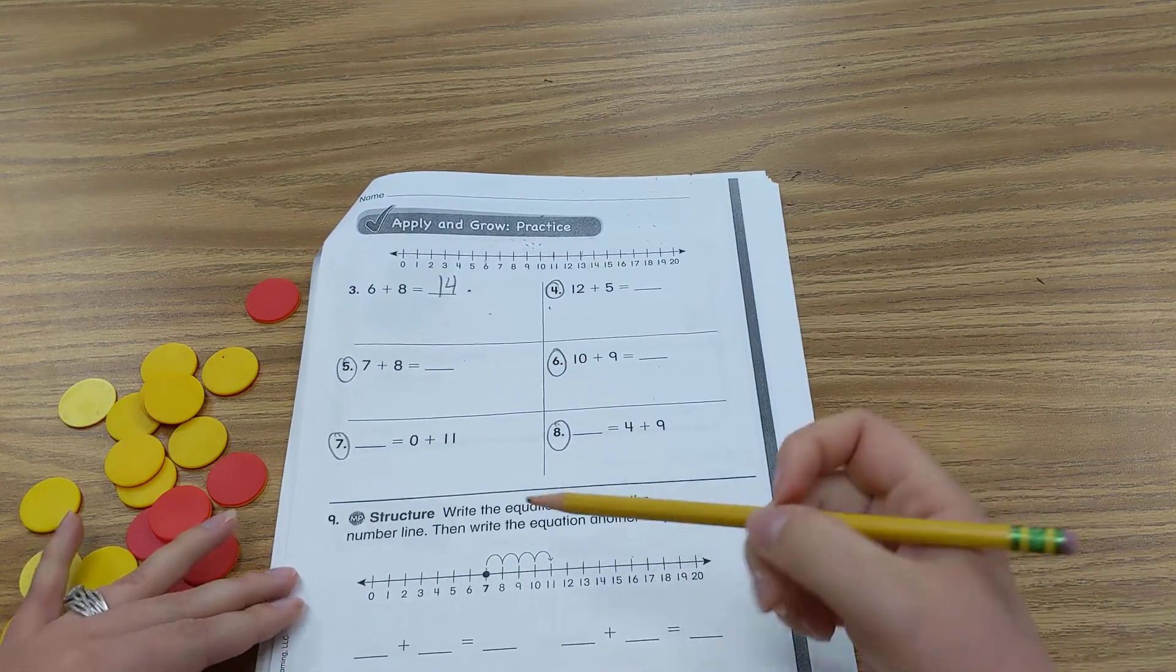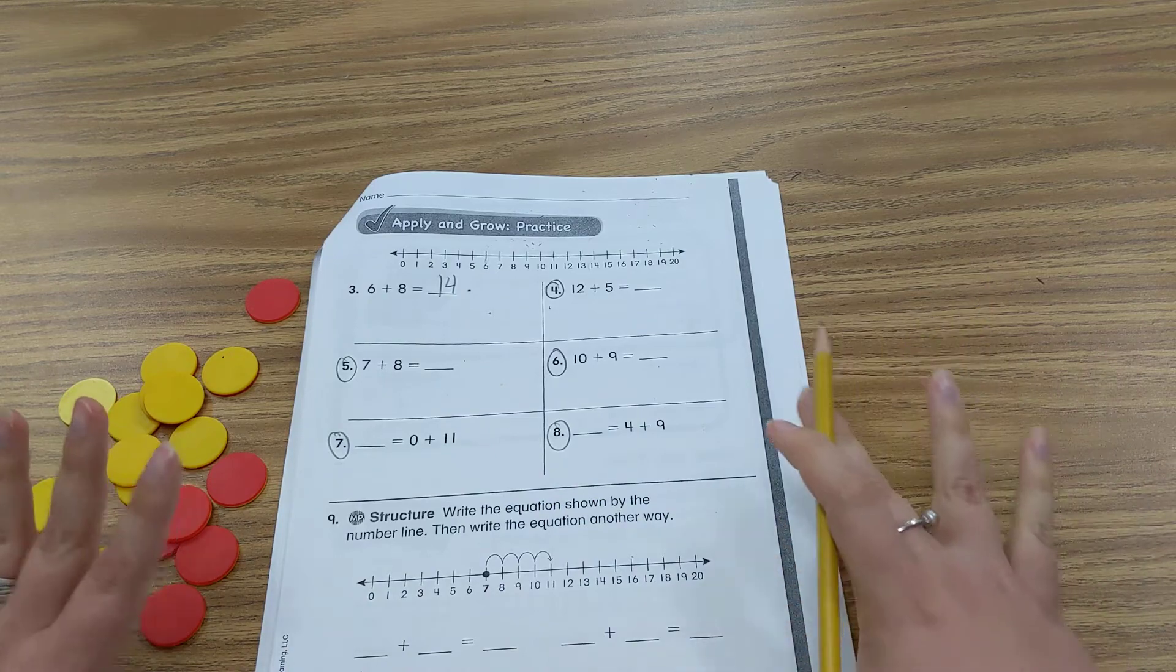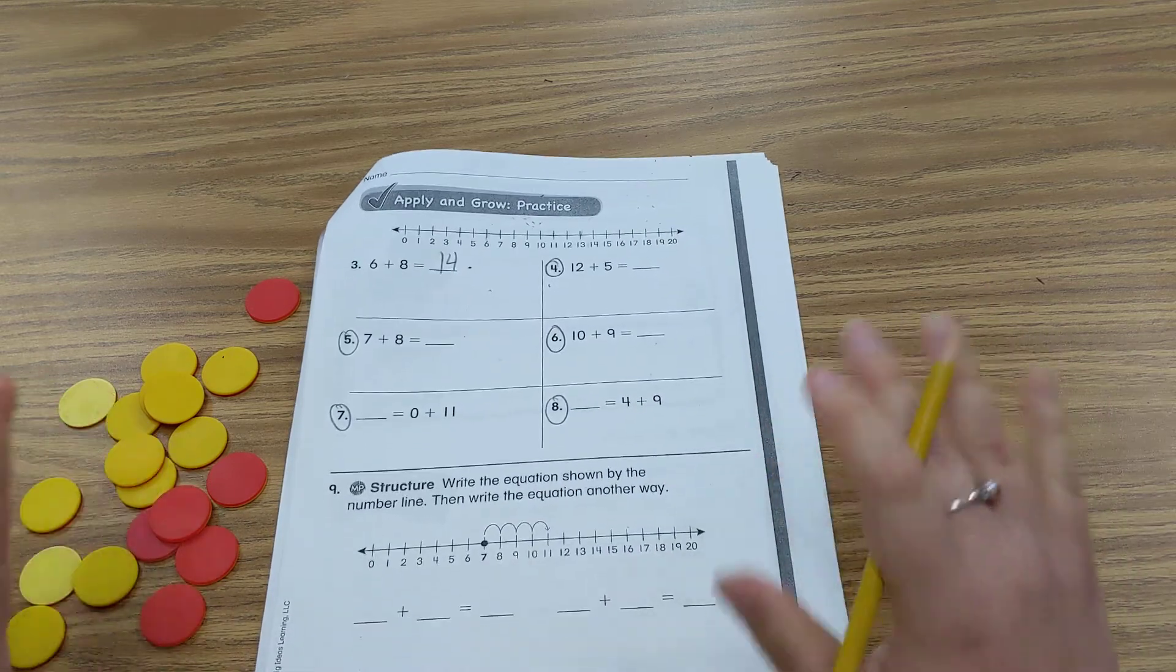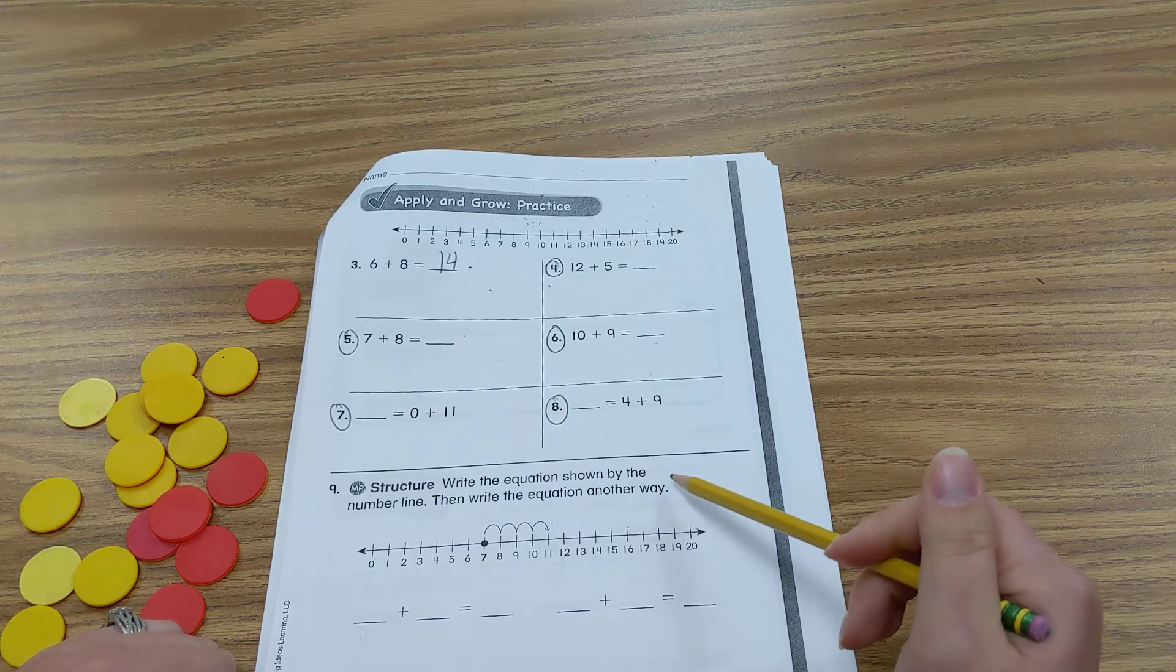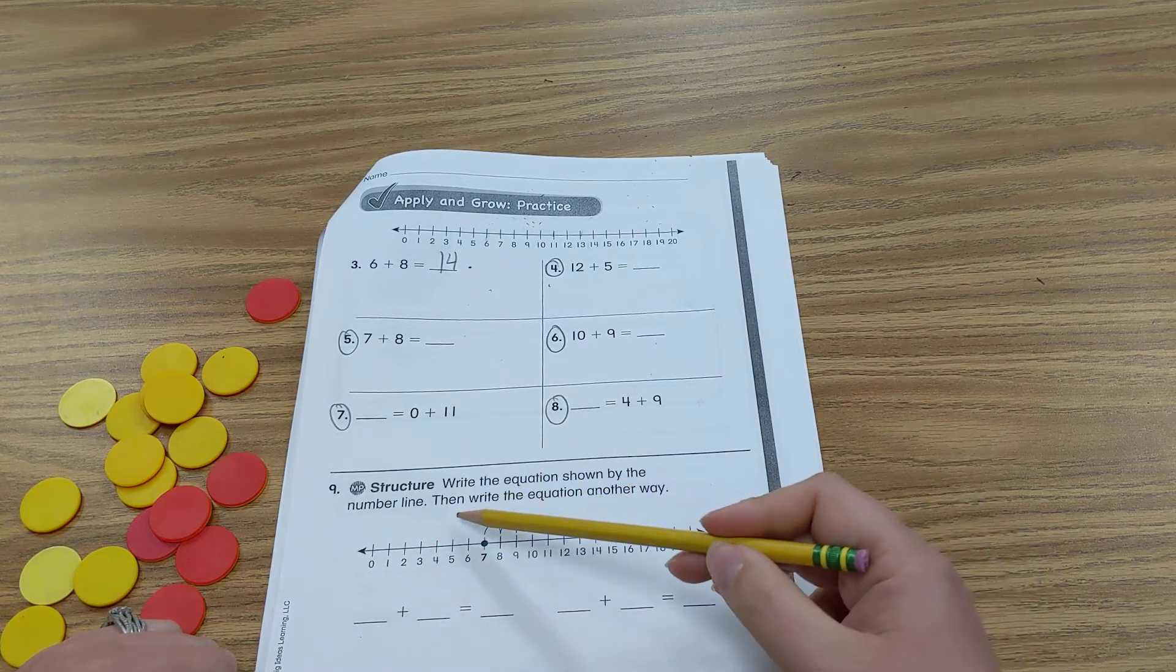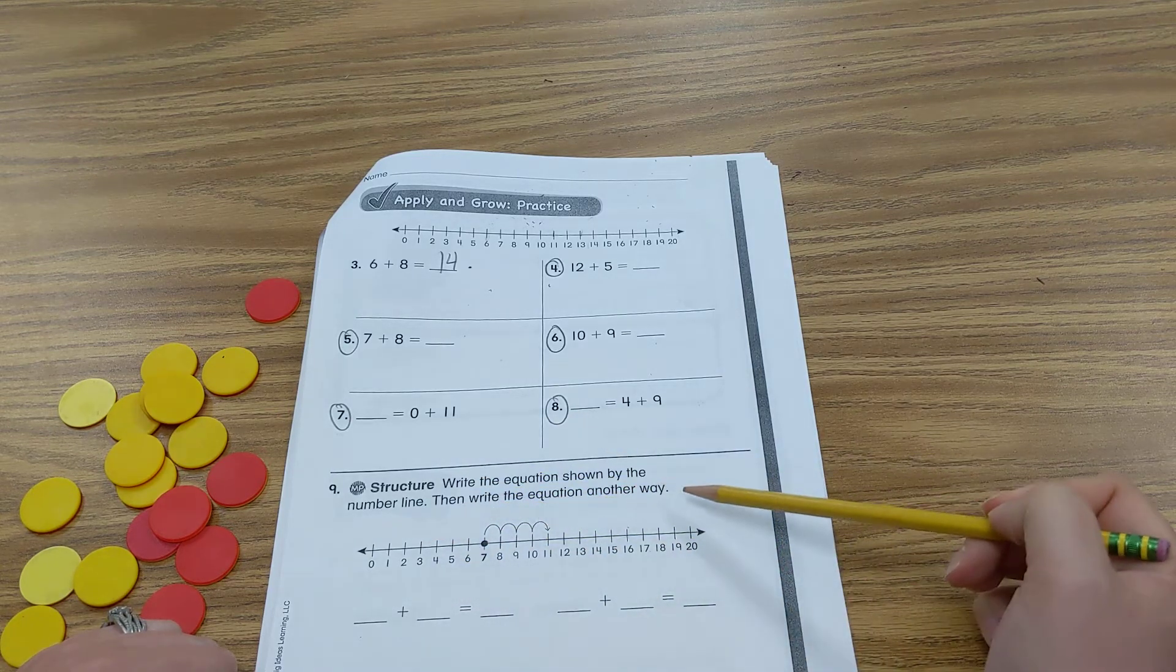Now let's go to number 9. And again, always pause as needed and push play when you are ready. Write the equation shown by the number line. Then write the equation another way.